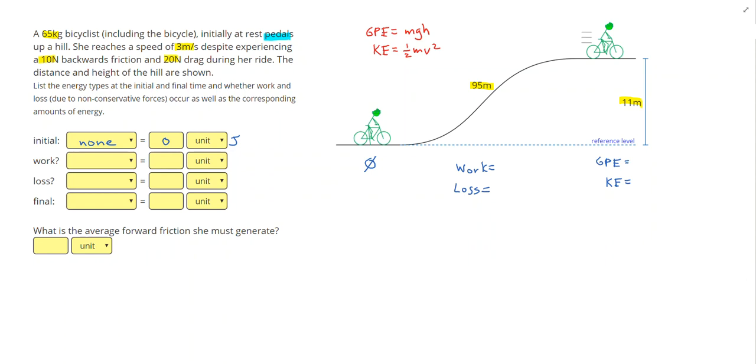So let me just go ahead and list over here that I'm going to need to know the mass, the gravitational constant, the height of the hill, and her velocity. Those are associated with the GPE and the KE. Work and loss are both force times distance. So work equals the force doing the work times the distance, and loss equals the force causing the loss times distance. So underneath these two, I'm going to write F work, F loss, and distance.